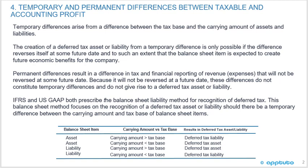Both IFRS and US GAAP prescribe the balance sheet liability method for the recognition of deferred tax. This balance sheet method focuses on the recognition of a deferred tax asset or liability based on a temporary difference between the carrying amount and the tax base of balance sheet items.